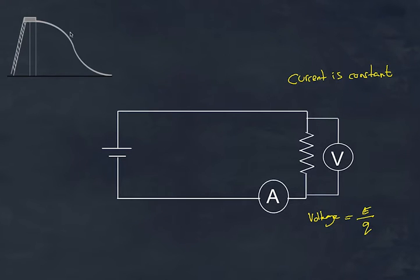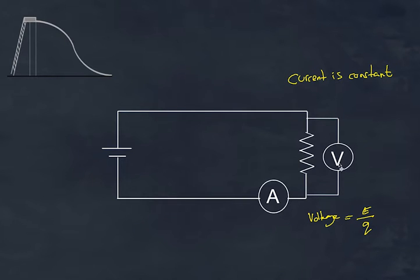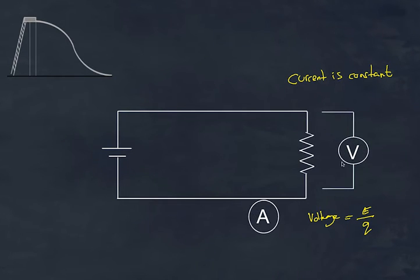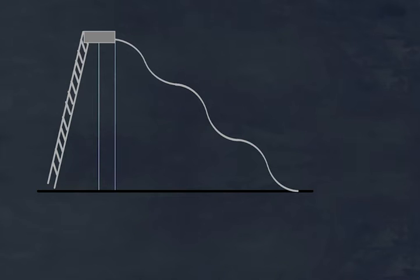Strictly speaking, it's not a loss — the energy doesn't disappear from the universe; it's converted to other forms such as light, heat, and sound. Just like a person climbing a slippery slide gains potential energy which is then transformed into kinetic energy, heat from friction, and so on. The amount gained equals the amount transformed. That gives you a simplified view of a simple circuit — the voltmeter is our Victor, and the ammeter is our Amy.